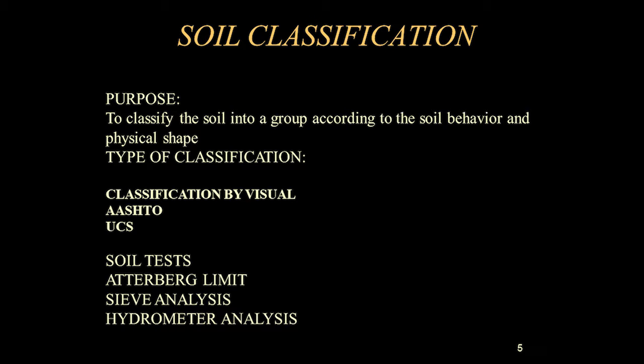Soil classification aims to classify soil into groups according to soil behavior and physical shape. Types of classification include classification by visual, AASHTO, or UCS.